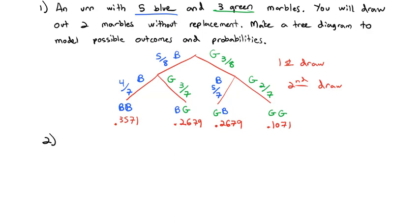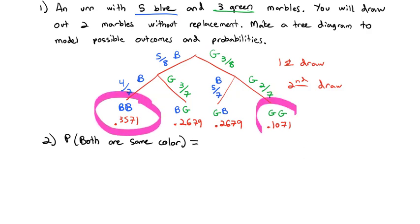We can use that table to find things like the probability that both marbles are the same color. Both the same color would be blue-blue or green-green. There's no overlap between those two outcomes, so we just add them together: 0.3571 plus 0.1071 gives a probability of 0.4642.